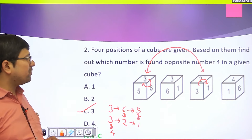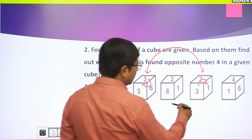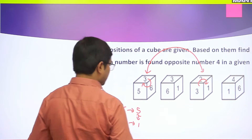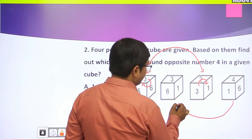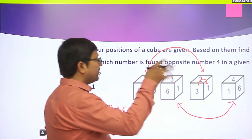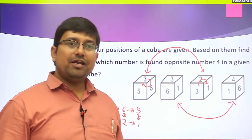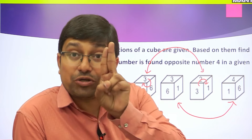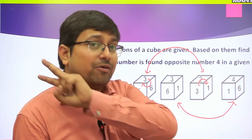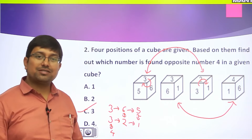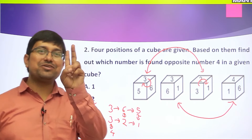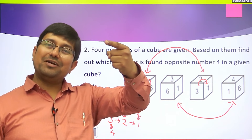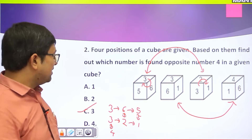Now let me show you another method using a second property. Look at two other figures. Next property: if two or more positions of the same dice are given and they have exactly two common faces, then we can only determine one pair of opposite faces.